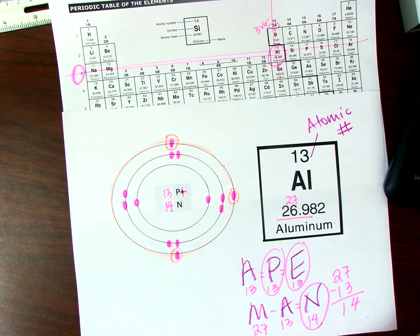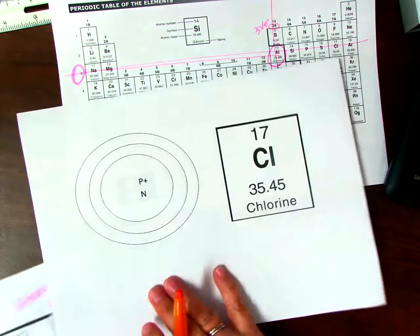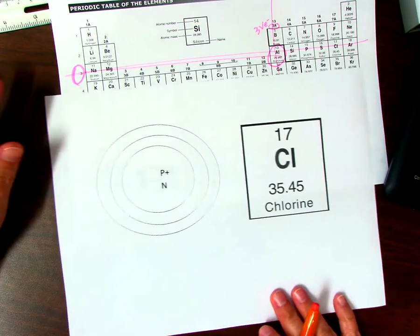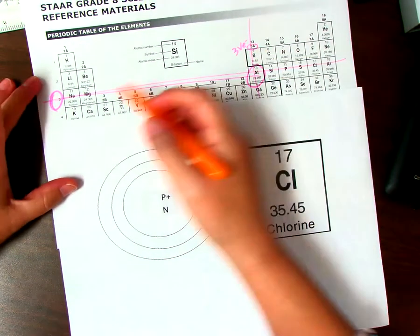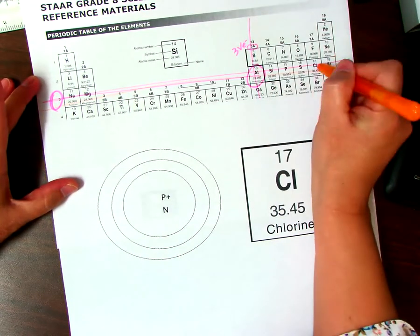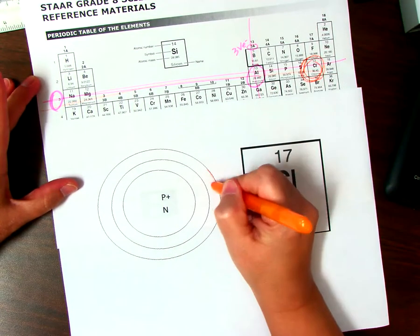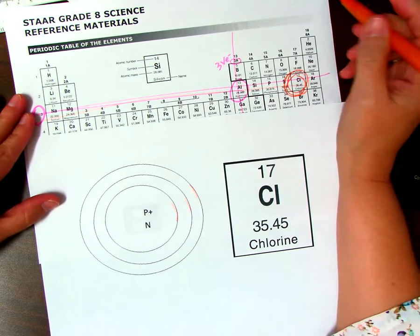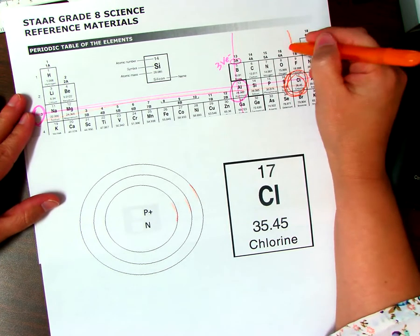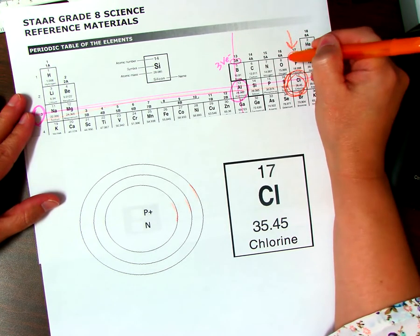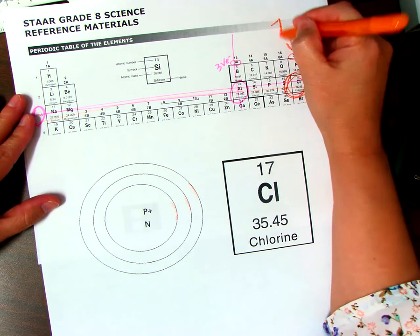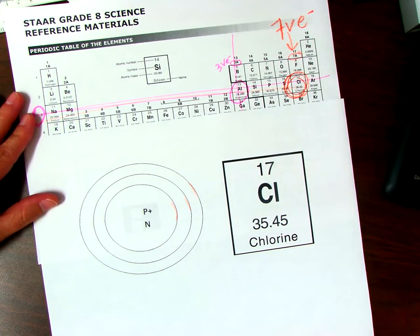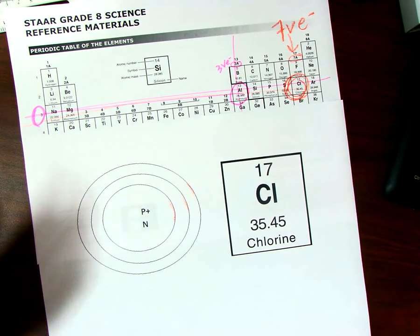Let's try another one. We have chlorine. Chlorine is also in period 3, so we are going to use all three, but we see that it is in group 17, 7A, that means there will be seven valence electrons. Let's do Ape Man first.